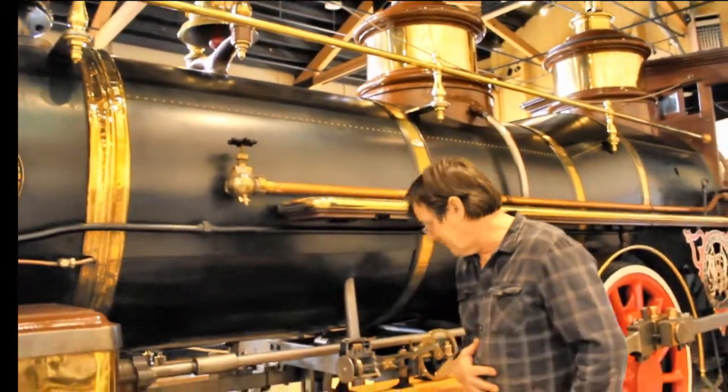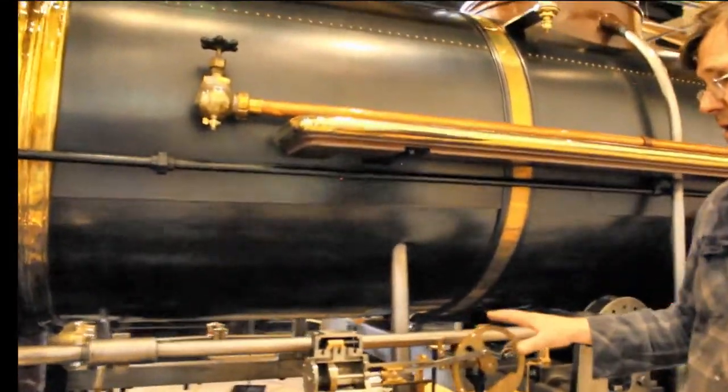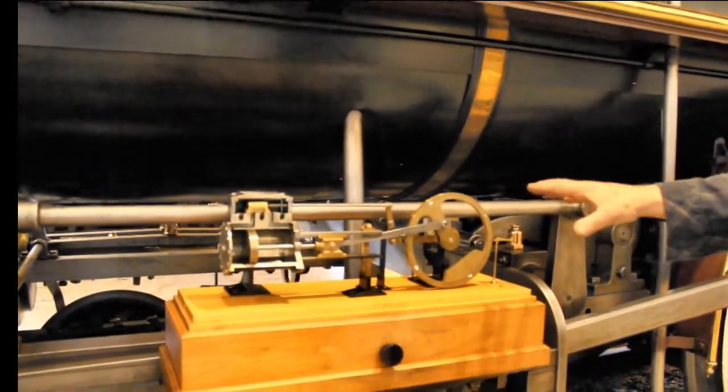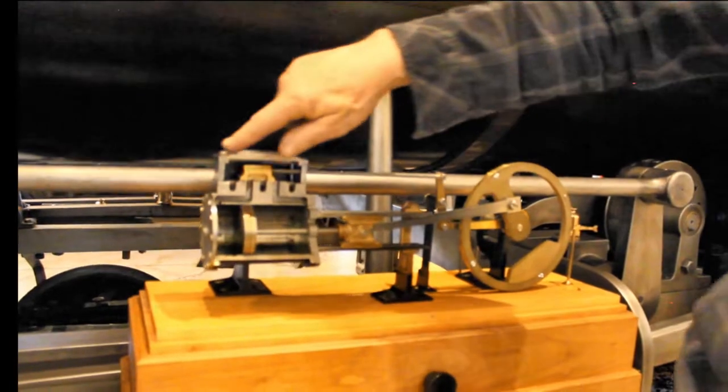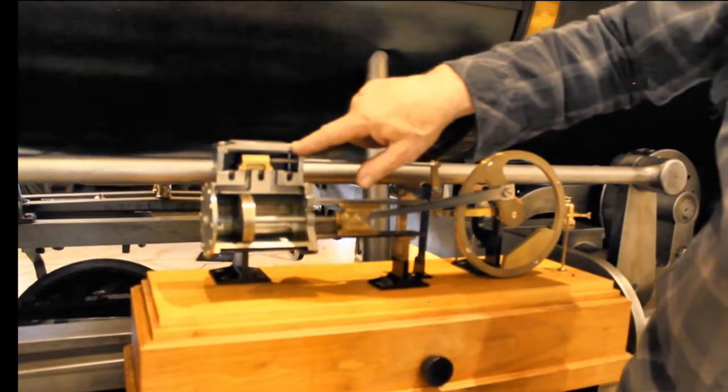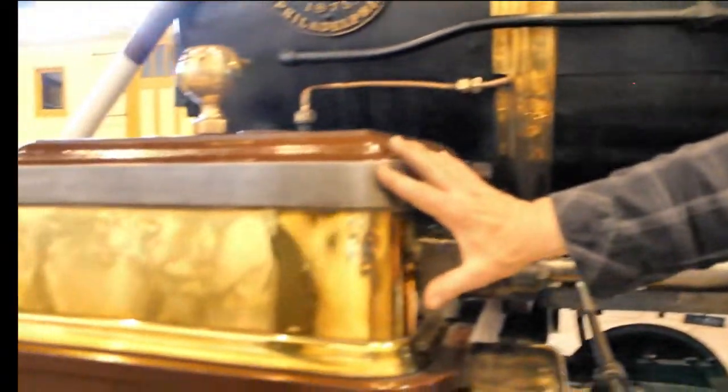We can see in a very simplified form how a steam locomotive, notably this one, would work. So as we look at this, we have this area right here, and this is what we call the steam chest. That is this part right here.